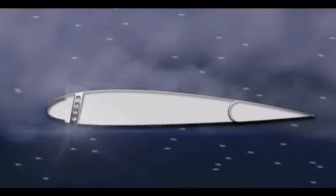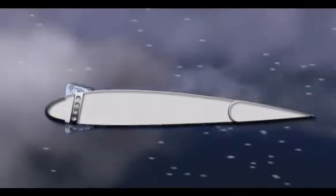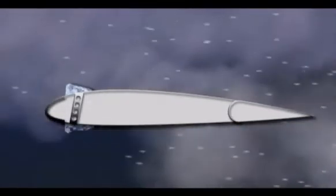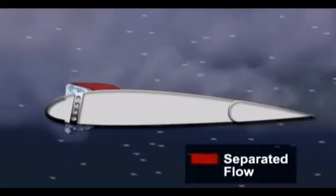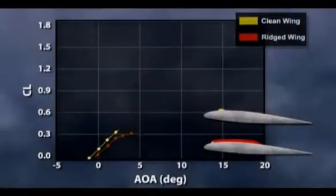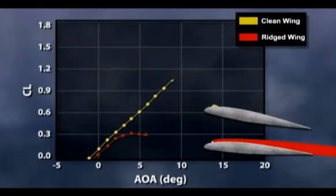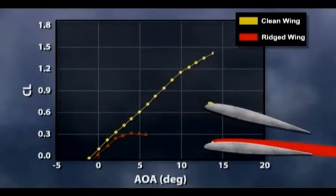SLD accumulations, particularly the ice ridge aft of the protected areas, may also significantly alter the wing's lift characteristics. The ridge will disrupt the airflow and create a region of separated flow. Wind tunnel tests were conducted on a NACA 23012 airfoil with a simulated SLD ice shape. The measured lift and angle of attack show a dramatic decrease in the maximum lift capability and stall angle.